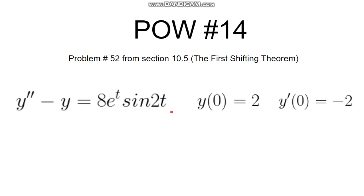For this problem, we will only do number 52, which comes from section 10.5. We have y double prime minus y equals e to the t sine 2t, and then we have y(0) equal to 2 and y prime of 0 equal to negative 2.